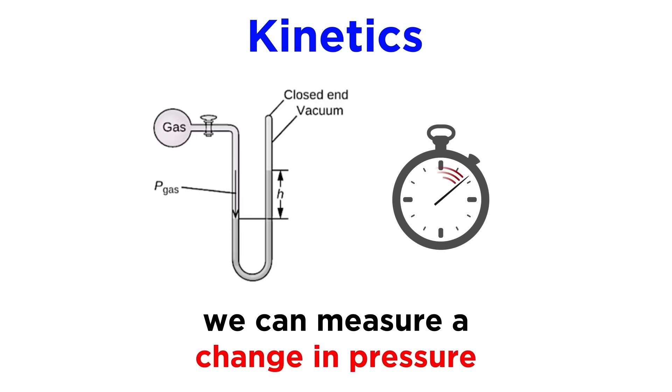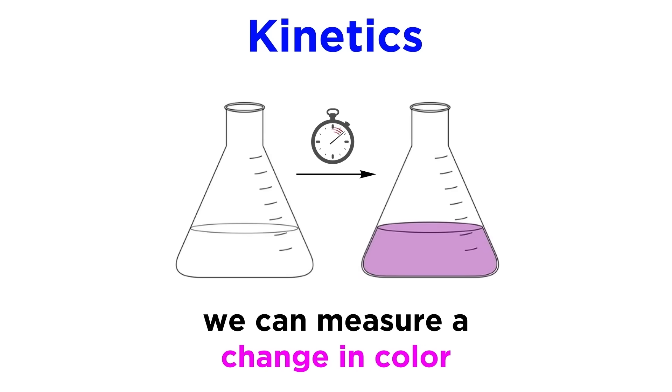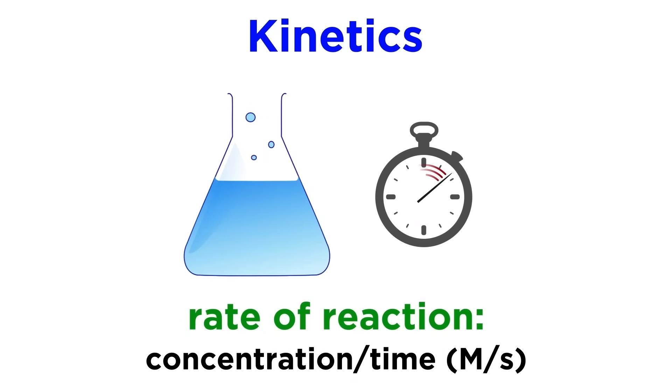Sometimes this is easy to measure, like if a product of a reaction in liquid solution is a gas, and we measure the changing pressure that the gas exerts. If a colorless solution generates a colored product, we can measure the change in color by measuring light absorption. But whatever the method may be, rates of reaction are always expressed the same way, and that is change in concentration over time.